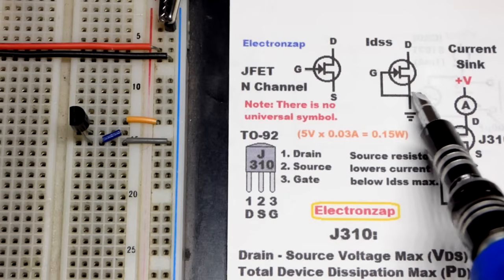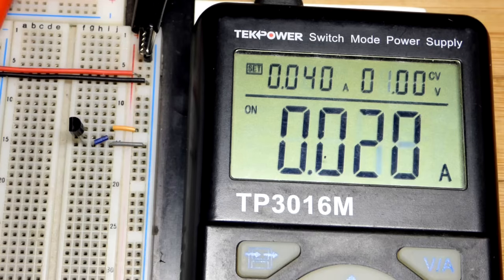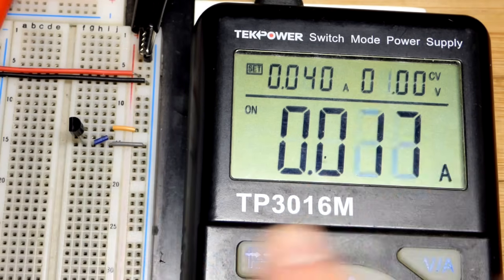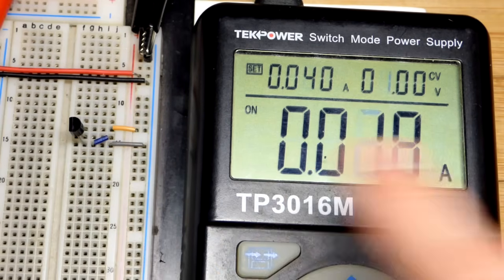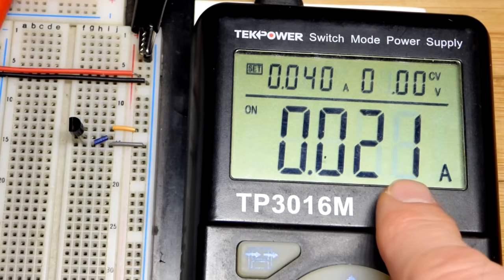And to do this test, you also have the gate connected to ground. So now, the IDSS is going to be the current that the component limits. Right now, it's set to basically pass as much current as it can. And we don't have enough voltage, though, in order to do so.